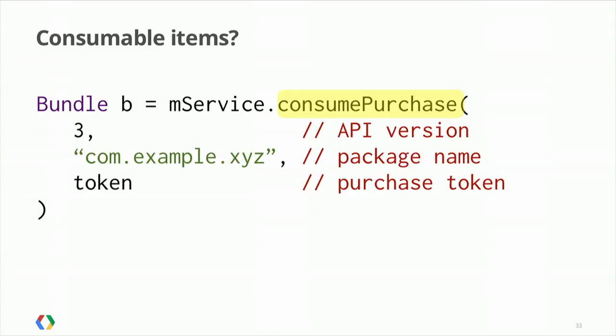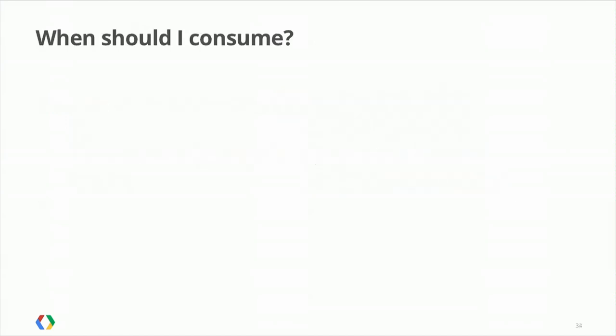When you consume, the item goes away. As far as code goes, this is how you consume an item: you call consumePurchase on the API and give it the purchase token associated with that item. Remember that the purchase token is the same one you got from the getPurchases call in the purchase token field of that JSON. Then the item is consumed. One decision you'll have to make is when to consume something — that's up to you.